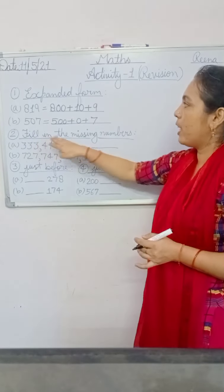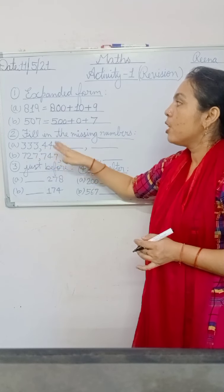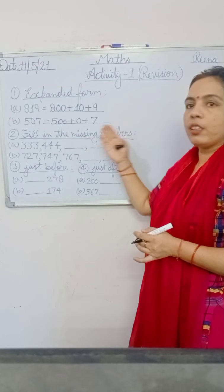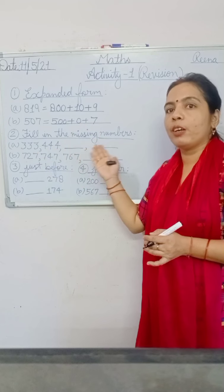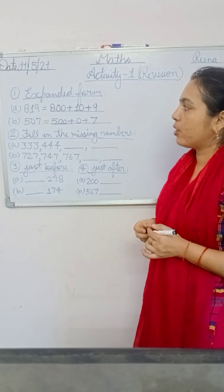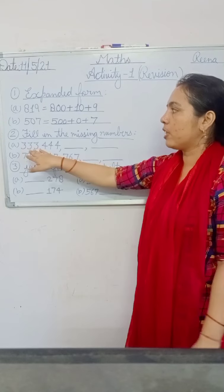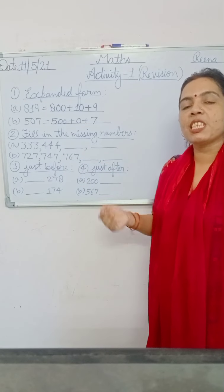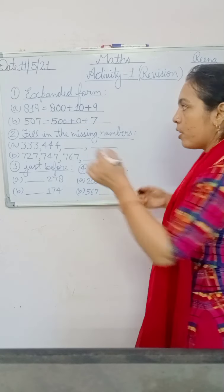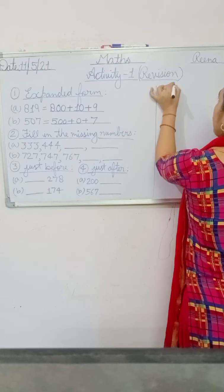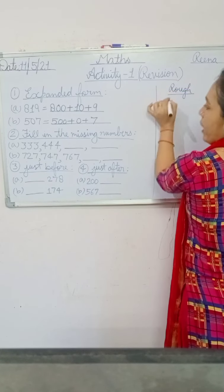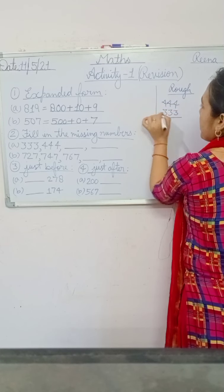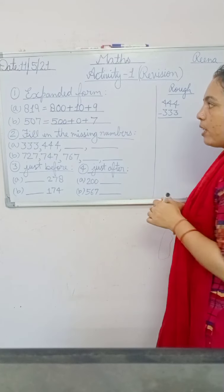Now question number two is fill in the missing number. You have been given some numbers. You need to write the numbers that come after the given numbers. In numbers ke baad jo numbers diye gaye hain, unko write karna hai. Now use the rough side to find the difference. Subtract the smaller number from the greater number to find the difference.